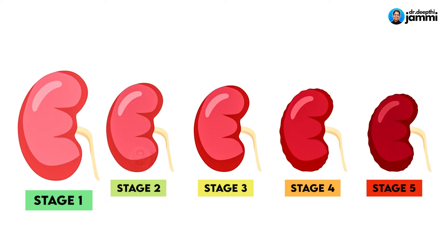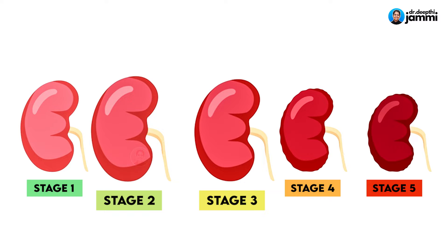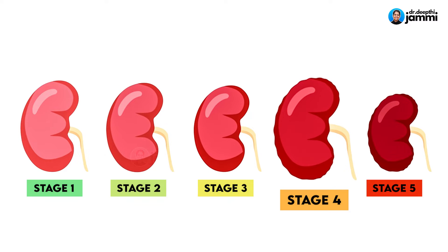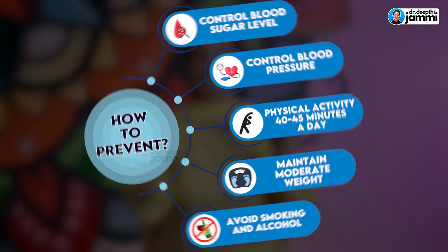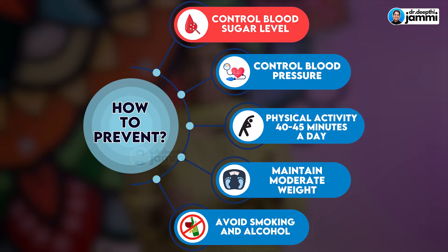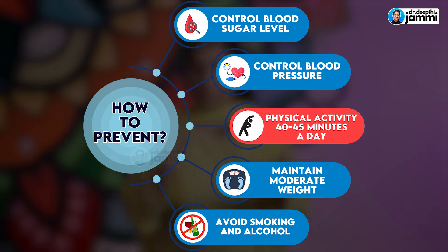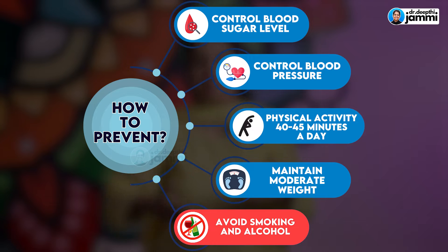How do we prevent progression? From Stage 1, there are medicines. To control Stages 2 and 3 before reaching Stage 4: first, if you are diabetic, sugar control is very essential. Second, if you have blood pressure, use anti-hypertensive medication tablets. Third, lifestyle changes — minimum 40 to 45 minutes of physical activity per day. Fourth, manage your weight. And last but not least, avoid tobacco, smoking, and alcohol — this is very, very important.